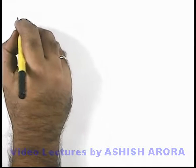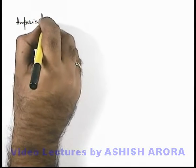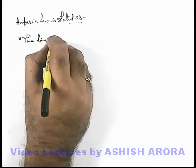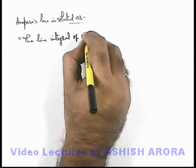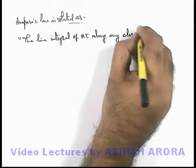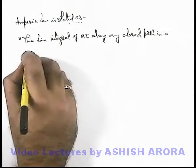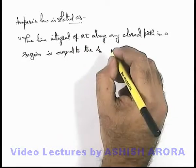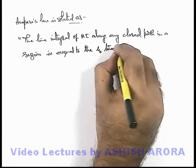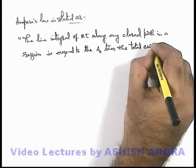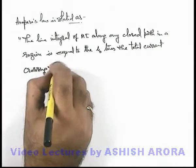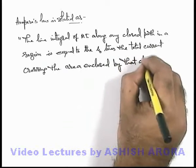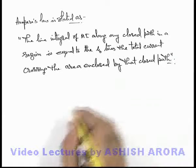So let's state Ampere's Law. Ampere's Law is stated as: the line integral of magnetic induction along any closed path in a region is equal to μ₀ — which is the magnetic permeability of free space — times the total current crossing the area enclosed by that closed path. This statement we call Ampere's Law.